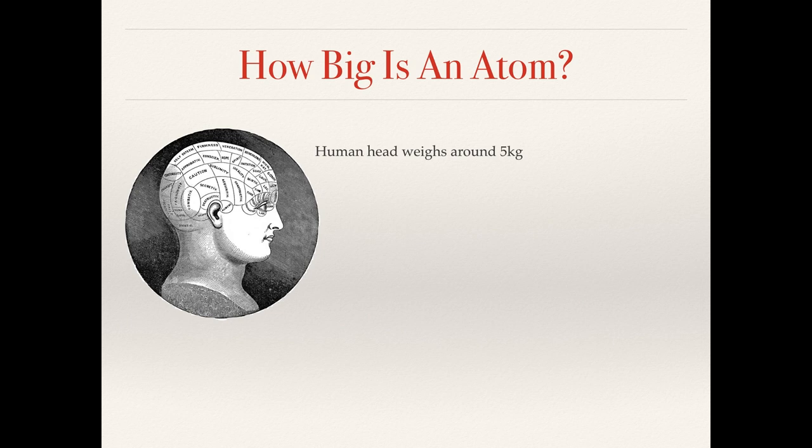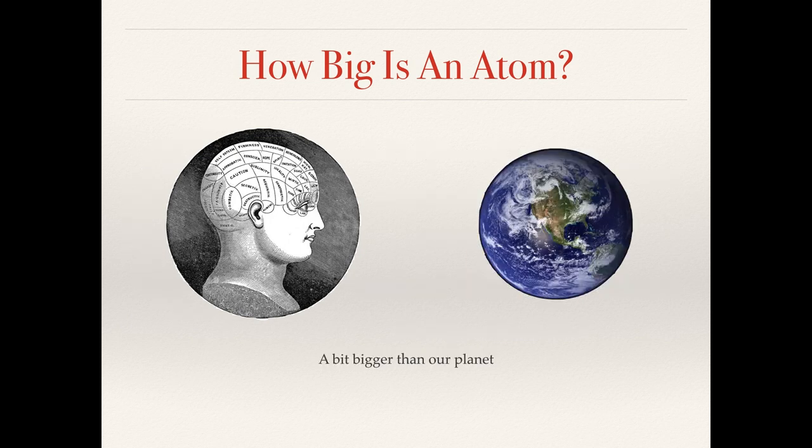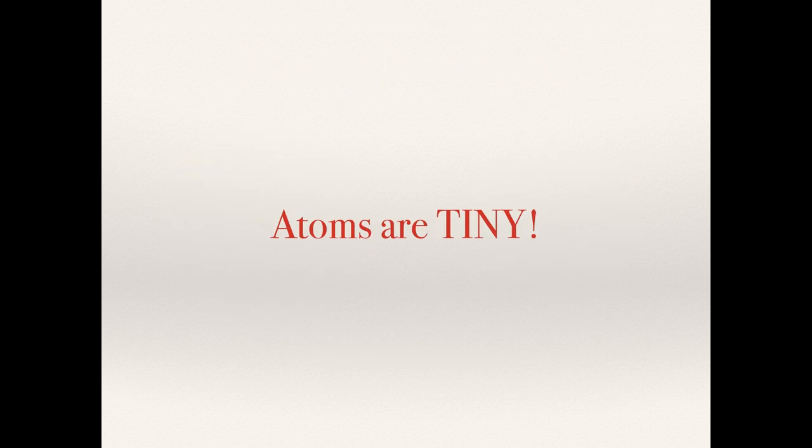So a human head weighs about five kilograms. That's around 2.5 times 10 to the 26 atoms. That's rather a lot of zeros. Not only is that a lot of zeros, it's also a big number, 250 septillion. It's a vast number. This is already not necessarily easy to understand, but let's make it a bit different. If we expand each atom in a human head to the size of a grape, how big would the head be? Well, it would be a little bit bigger than our planet. So the takeaway from this is atoms are absolutely tiny.